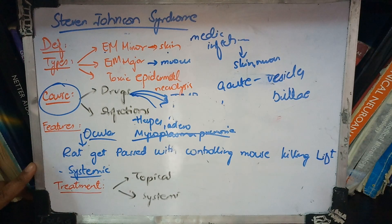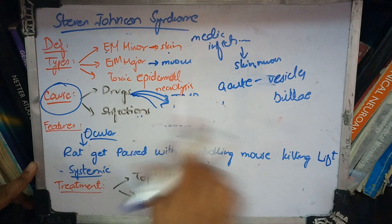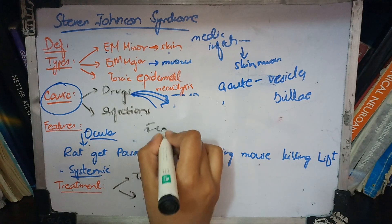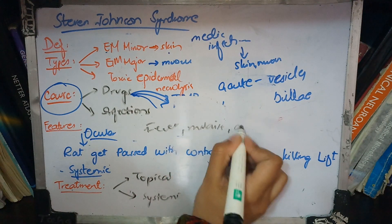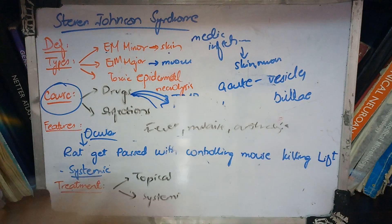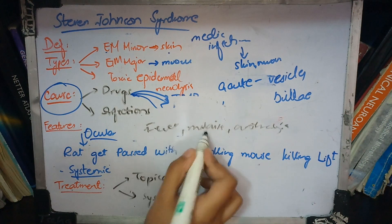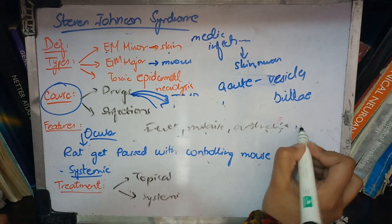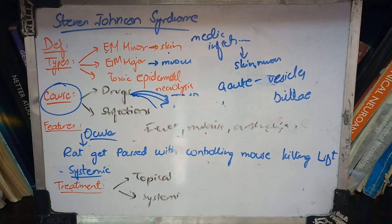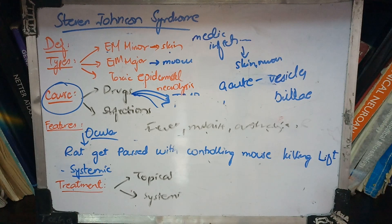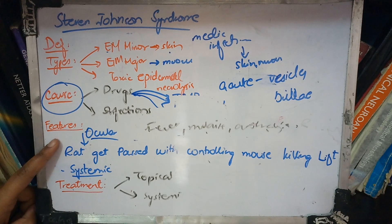Looking at clinical features: patients present with general features such as fever and malaise. Respiratory tract infections may also be present. Systemic features occur alongside ocular features, and we need to be specific about the ocular features as this is a relevant topic.